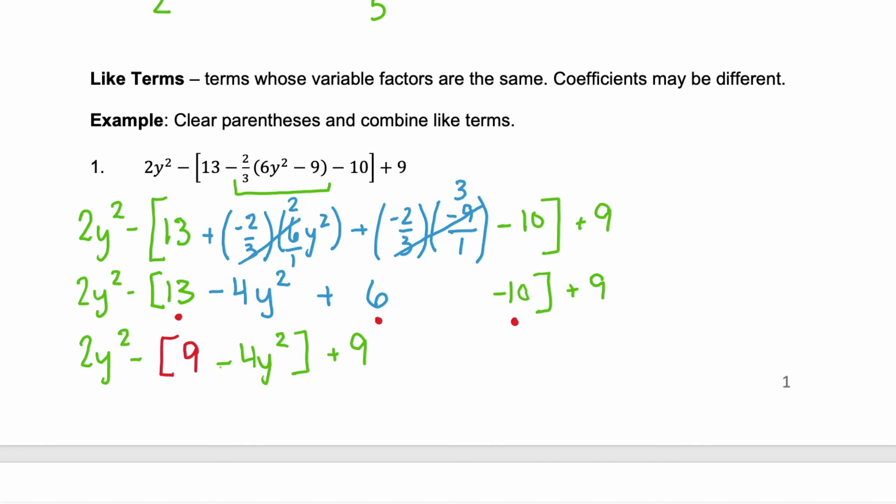Now the only thing left to do with this parentheses, since we can't simplify it, is to distribute this negative on the outside. We have 2y squared minus 9 plus 4y squared plus 9. Now we're going to look again for like terms. Well, we have the constant negative 9 and the constant plus 9. Those together, that's our inverse property. So those cancel each other out. They add to 0.